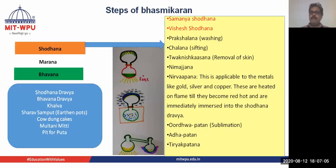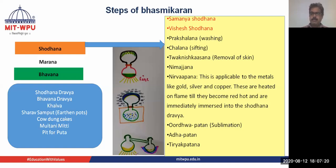The stages involved in Basmikaran are Shodhana, Marana, and Bhavana. Shodhana literally means purification, Marana means killing, and Bhavana means processing. These are the three stages involved in the Basmikaran process.